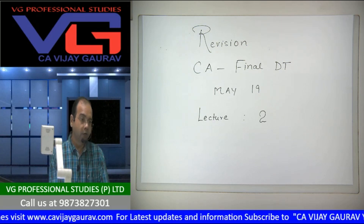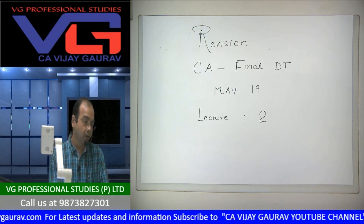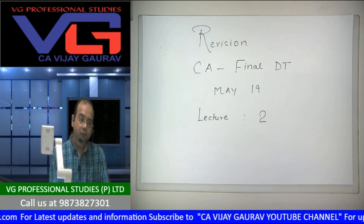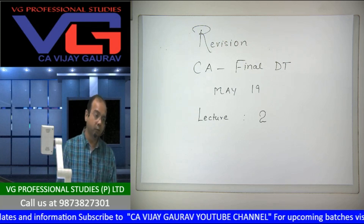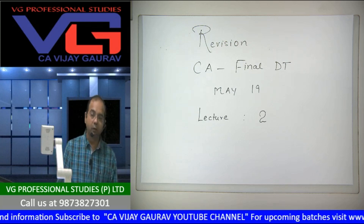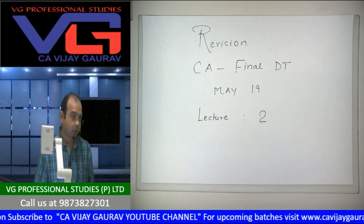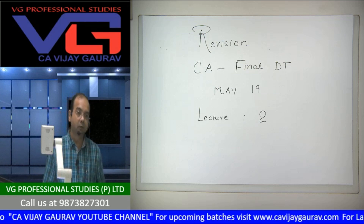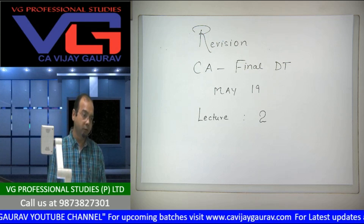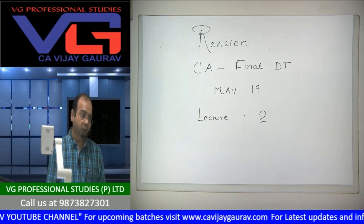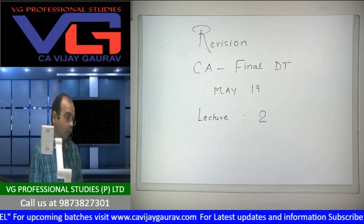Section 30 covers parallel deduction on the amount of building. Section 31 covers the amount of plant, machinery, and furniture. Those sections are meant for specific deductions. Section 30 covers 4 sections.